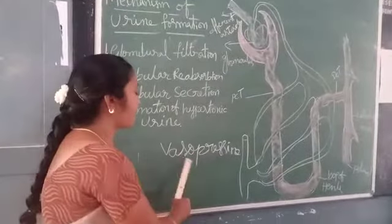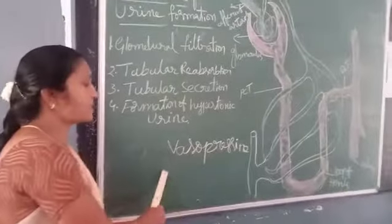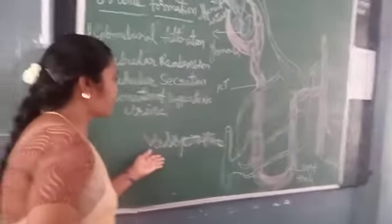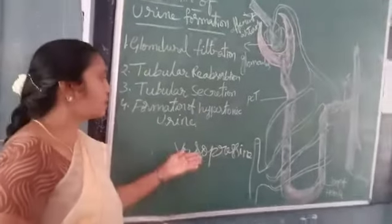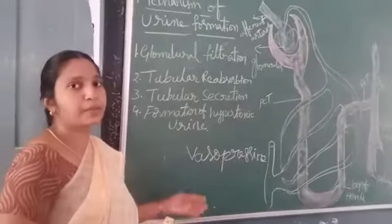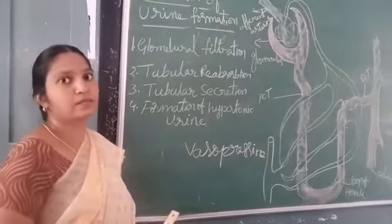Deficiency of this hormone causes diabetes insipidus. It means diluted urine will be passed out.